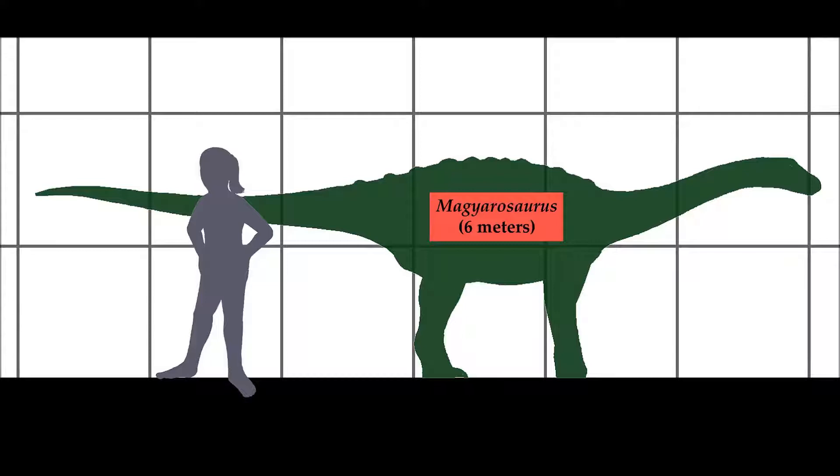yet retained high metabolic rates indicated by the highly vascularized tissue found in their long bones. They suggested that Magyaurosaurus's reduced body size is a prime example of island dwarfism, in which an organism undergoes evolutionary size reduction as a response to resource limitation.